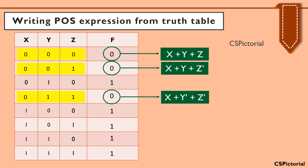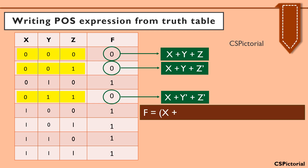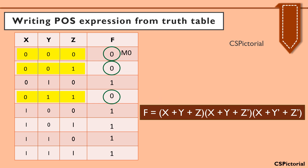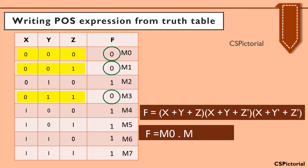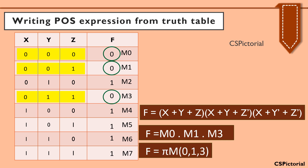Finally, we derive the POS expression by multiplying all the max terms. f is equal to (x plus y plus z) into (x plus y plus z bar) into (x plus y bar plus z bar). Another way to express a POS expression is to write the corresponding max term representation for which the output value is zero. Here, f is equal to M0 into M1 into M3, also written as f = π M(0, 1, 3).